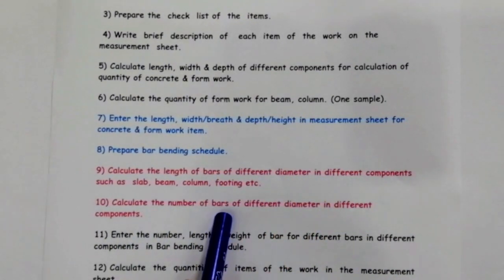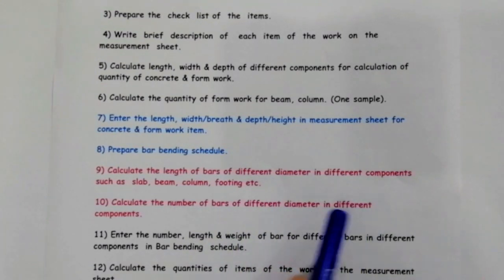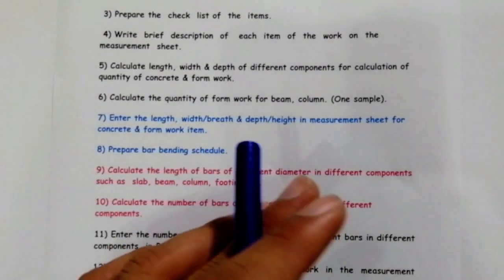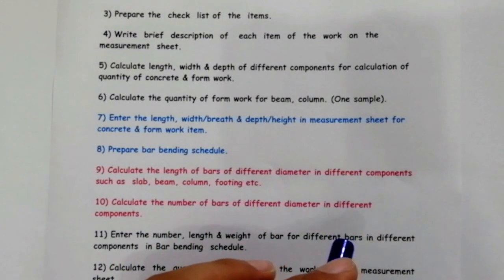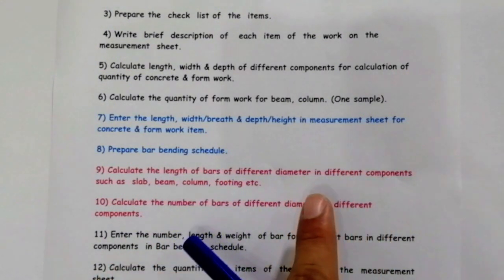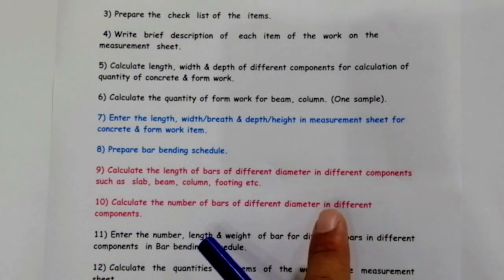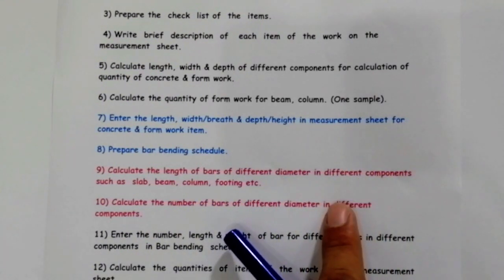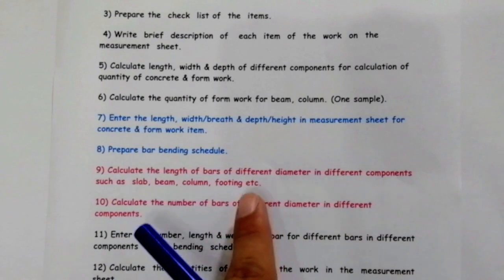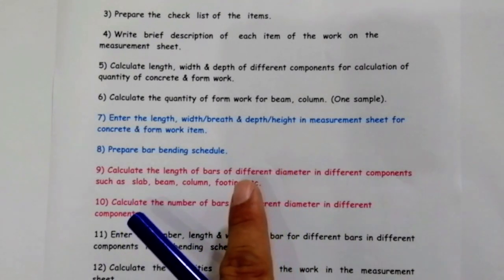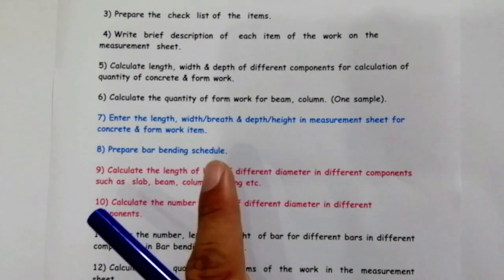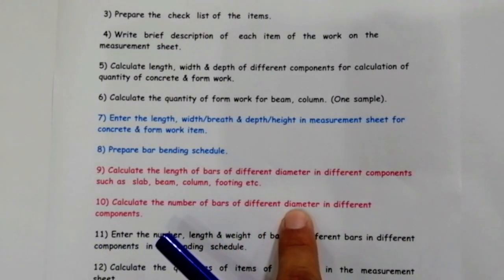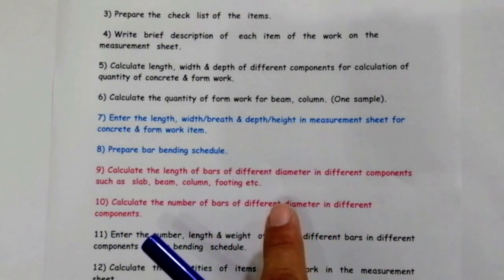The tenth point is: calculate the number of bars of different diameters for different components. For example, for a beam you have to calculate the cutting length and also the total numbers of steel bars in the beam or column. For different diameters — if you have 12mm diameter steel, find the length of bar for 12mm; for 16mm, find the length of bar for 16mm.